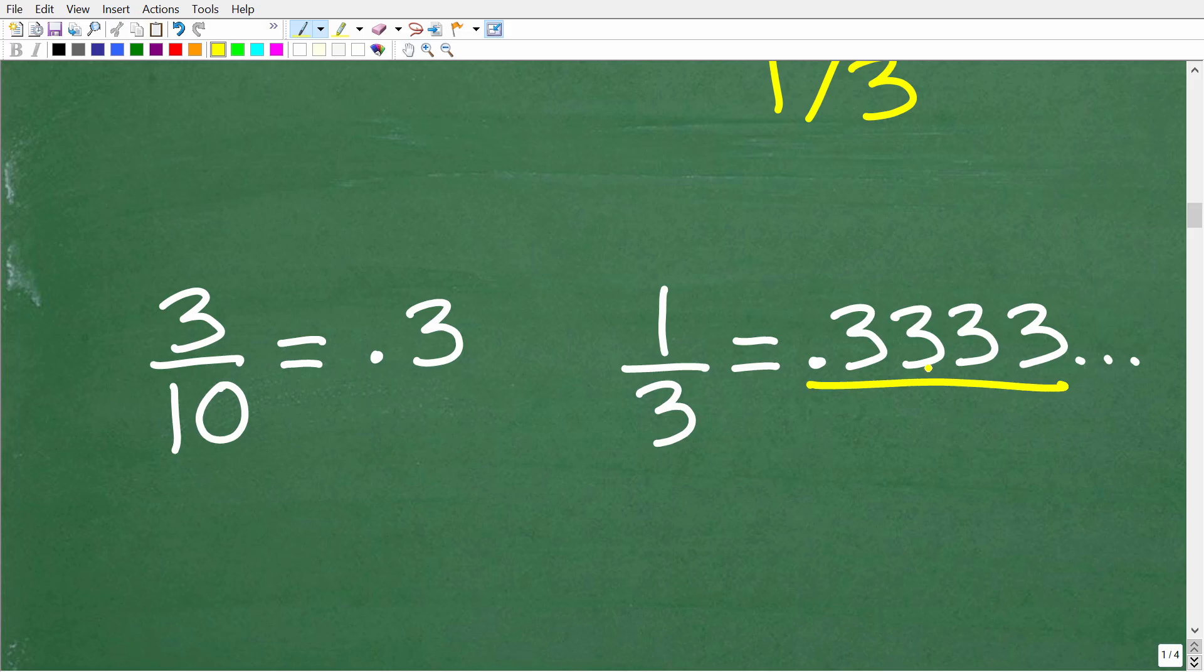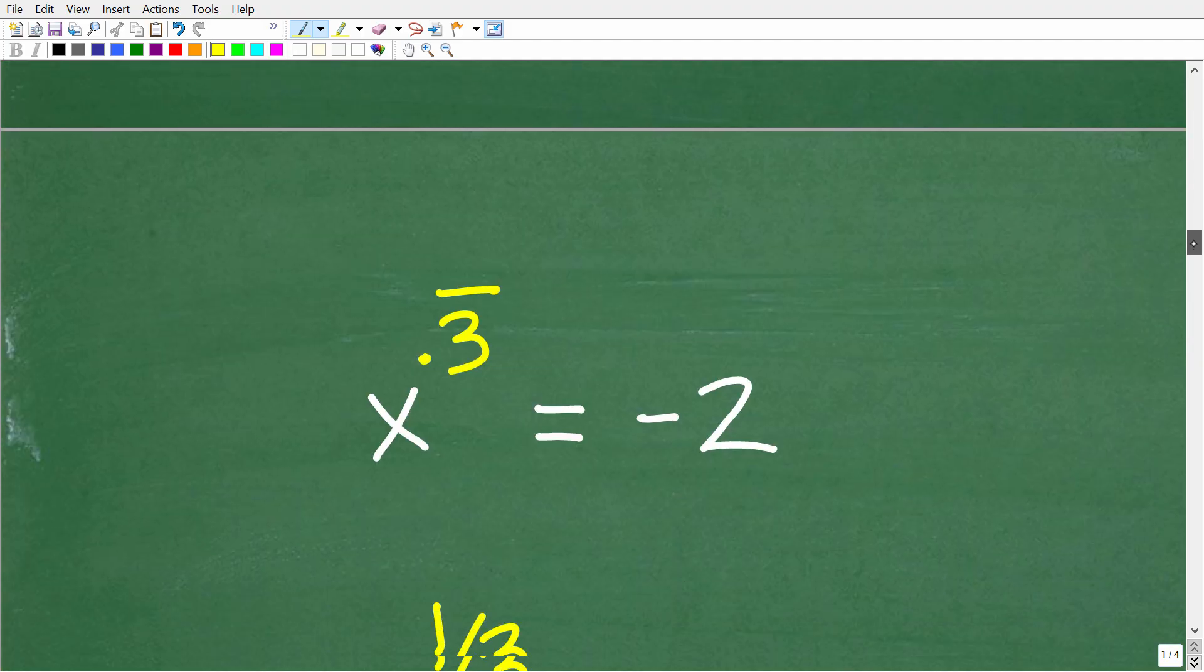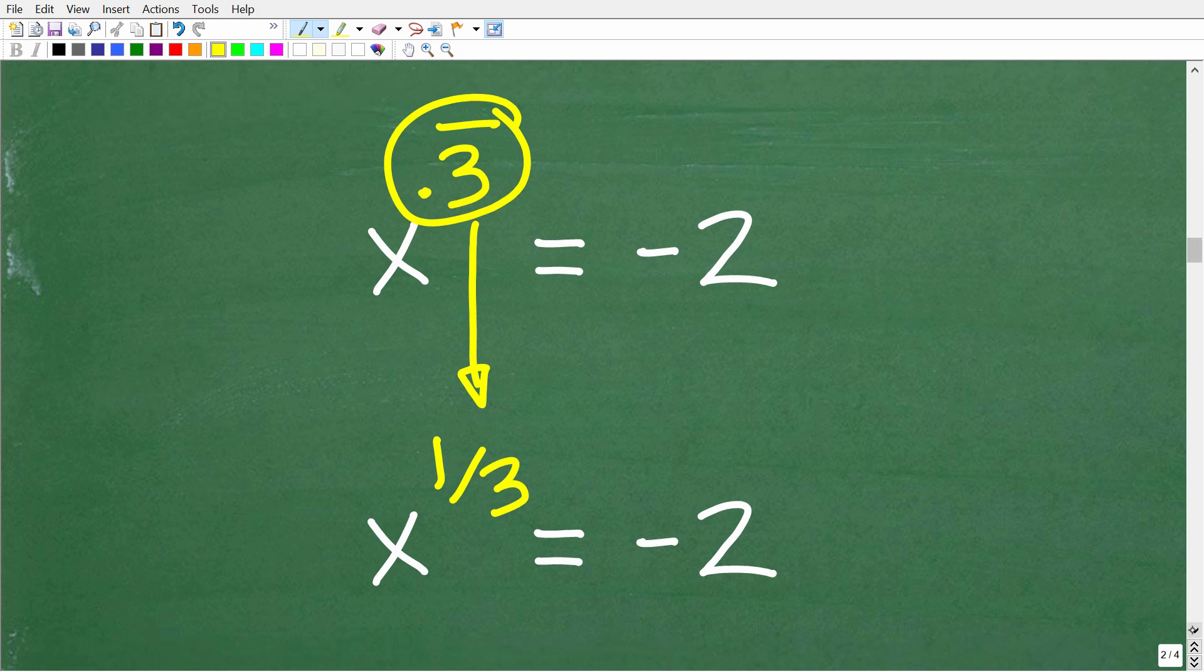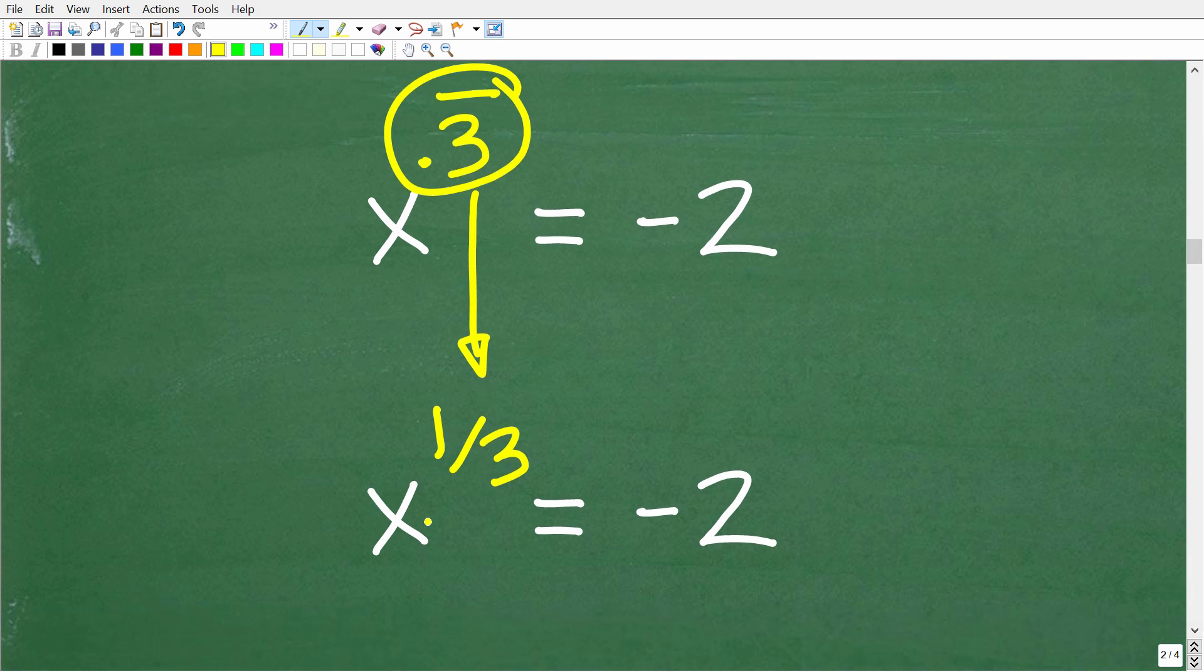All right, so instead of writing a bunch of threes like this, we just use this notation 0.3 repeating because the 3, this digit, is repeating. Okay, so now we can take a look at this equation. X to the 0.3 repeating is equal to negative 2. And think of this 0.3 as the fraction one third. All right, so now we need to figure out how to solve X to the one third is equal to negative 2.